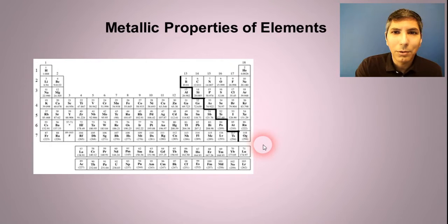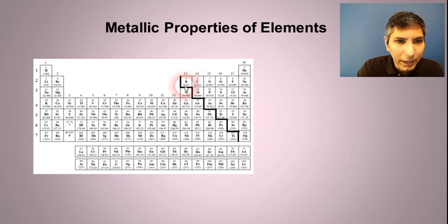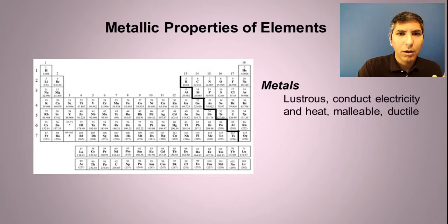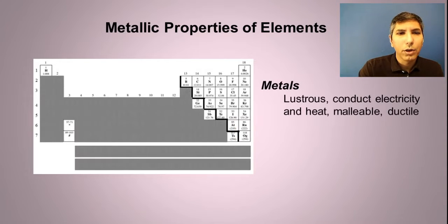You also need to know that we can classify elements by their metallic properties. Now notice on this version of the table, I've drawn a stair-step line here toward the right side of the table. That generally separates metals from the non-metals. Usually the metals are on the left side of the periodic table. So as you can see here, the ones I have shaded in gray except for hydrogen, the ones on the left side of that stair-step line, those are metals.